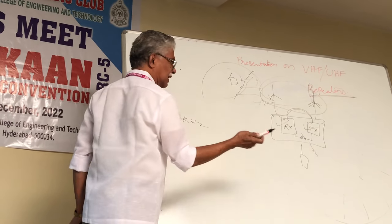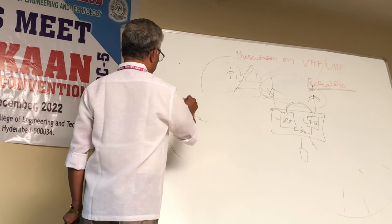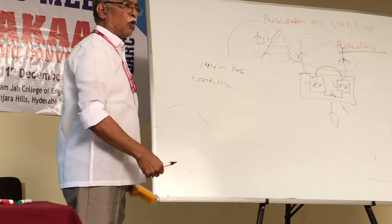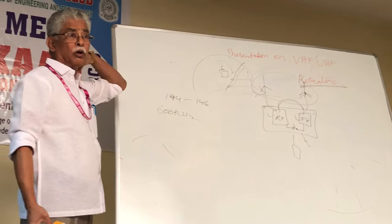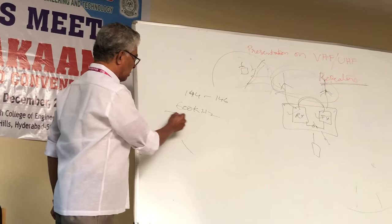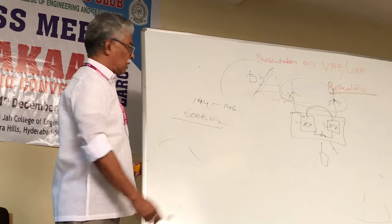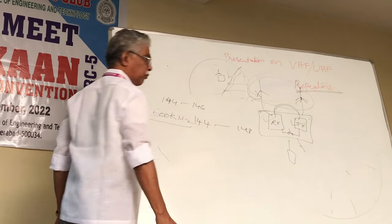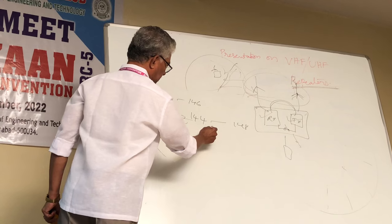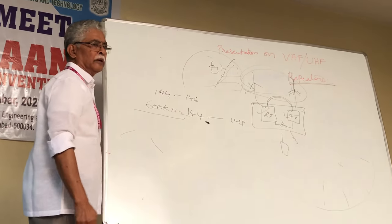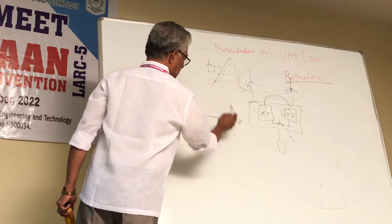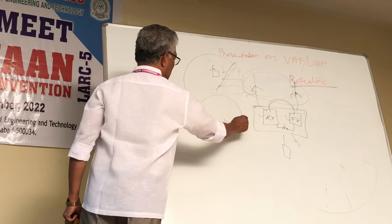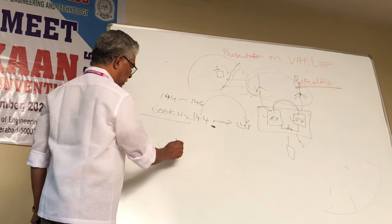We have only 2 MHz bandwidth from 144 to 146. This 600 kHz shift has become custom or tradition. I have been suggesting to everyone and even ARSI has suggested we ask WPC not to give frequencies in a stereotypic 600 kHz shift manner. Recently WPC has given us 144 to 148 — at the edge of 146 there is satellite activity. Why can't we ask WPC to give us a 1.2 MHz or more shift?